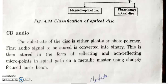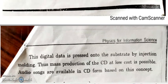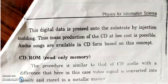Next is CD audio. Here the audio signal is converted into an analog audio electrical signal, which is then converted into a digital signal. That digital signal is fed to the laser device, which produces light output. The substrate of the disk is either plastic or photopolymer. The laser output is stored in the form of reflecting and non-reflecting micro points on the substrate. The digital data is processed on the substrate by injection molding, so the CD is available at low cost.